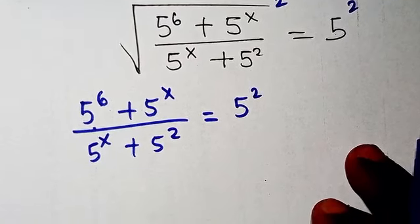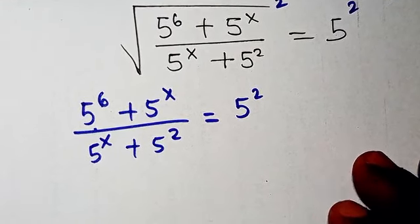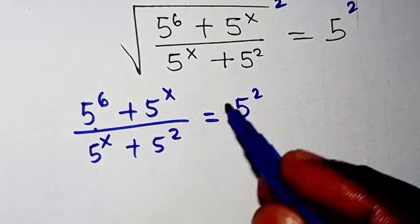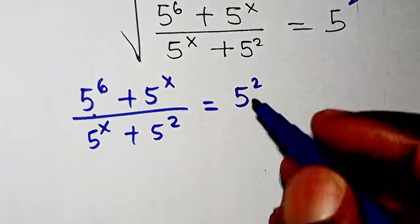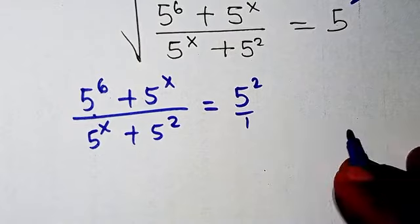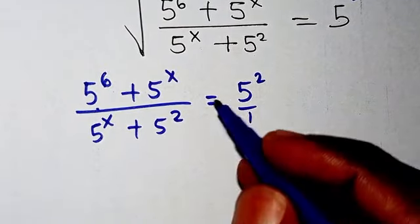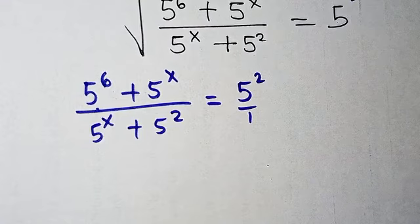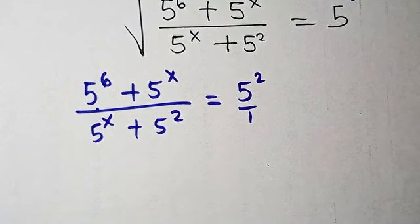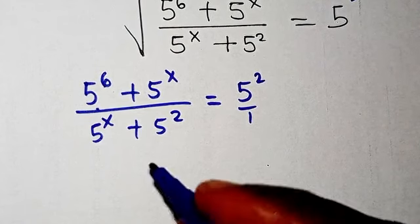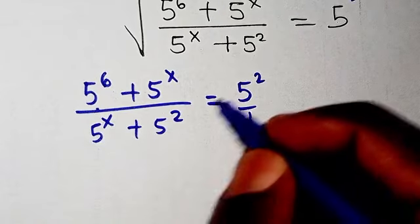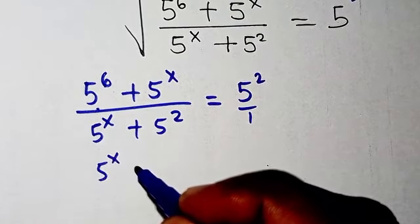Now let's move on. From here we try to cross multiply. So if we cross multiply, what are we going to have? We have this 5 to power x.